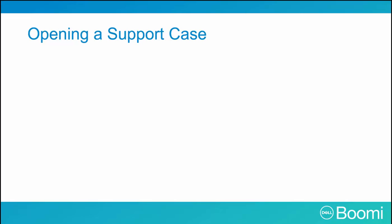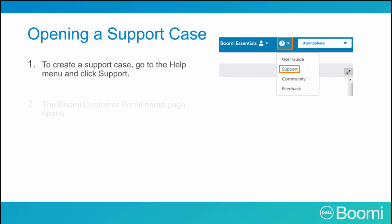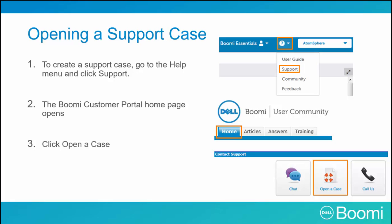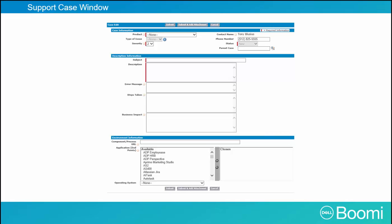Let's examine how to open a support case using the preferred method. To create a support case from your Atmosphere account, go to the Help menu and click Support. The Boomi user community homepage opens. Halfway down the page is the contact support section with three options: chat, call, and the one you want — open a case. When entering a support case, three different sections must be completed.